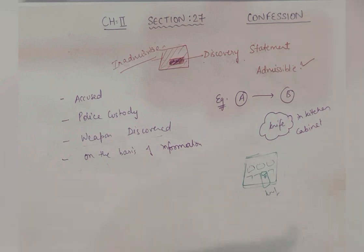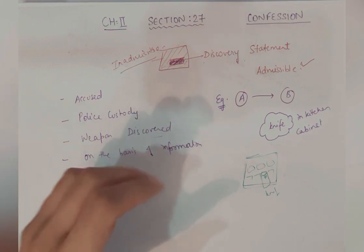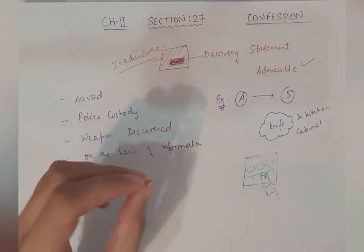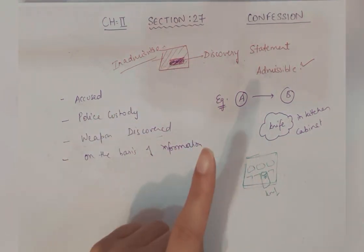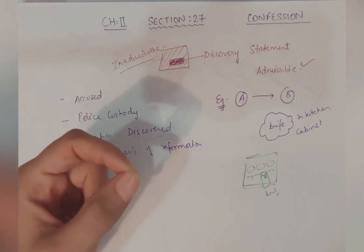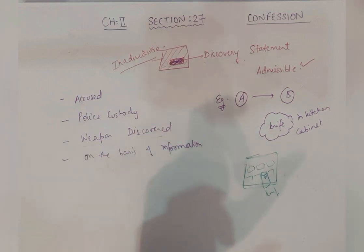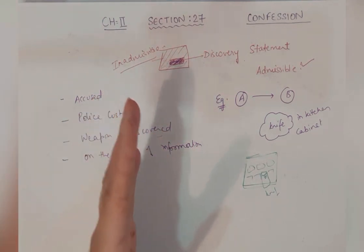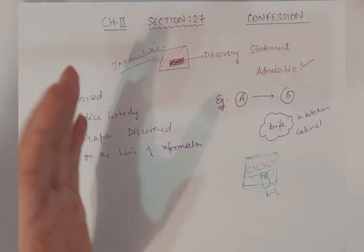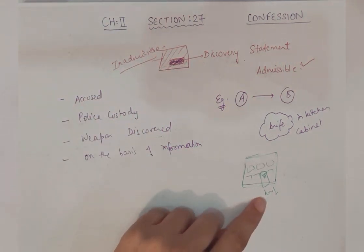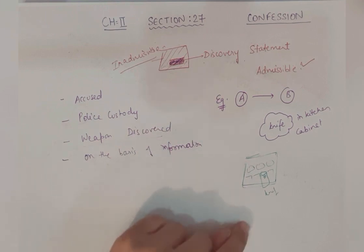In consequence of that information, you found that particular thing. Section 27 gives an inclusive principle — that even if a confessional or non-confessional statement is inadmissible, ye inadmissible hoti hai, the discovery part of the statement shall be admissible. I am saying it again: while in police custody, the accused may make a confessional or a non-confessional statement, and in that statement he may disclose the place of hiding of an object which is relevant in the proceeding. Such statement regarding the whereabouts of that object will be called a disclosure statement. Thereafter, the accused will be taken to that specified place and in front of independent witnesses, he will be required to pinpoint the place of hiding of the object, upon which the object will be discovered. That object has been discovered on the basis of information given by the accused — now it will be a discovery statement.